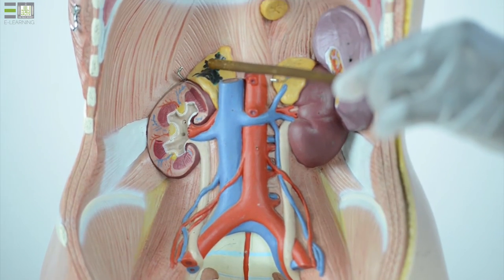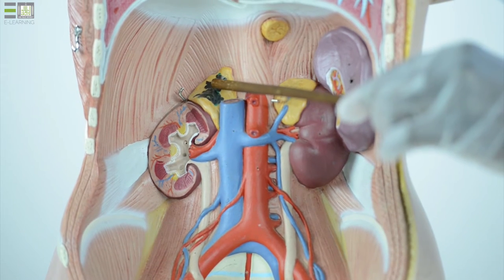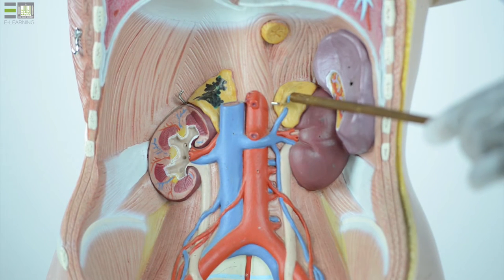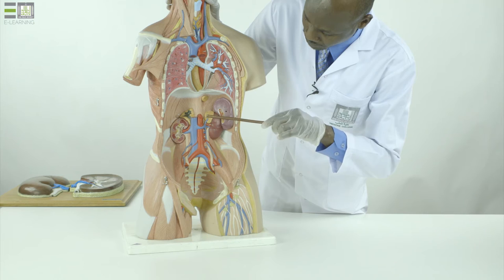Appear the right suprarenal gland which is triangular in shape and the left suprarenal gland which is comma shaped.